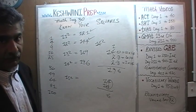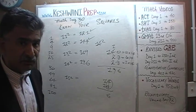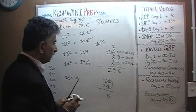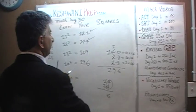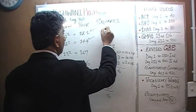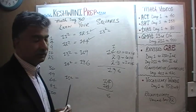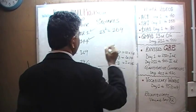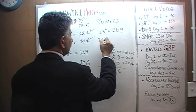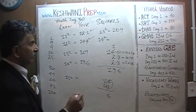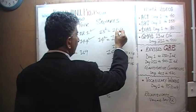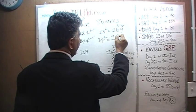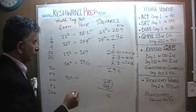For some strange and inexplicable reason, I don't have too much trouble remembering 13 squared — it's 169. So when I get to 14 squared, what I say to myself is: take 13 squared and just reverse the last two digits. Instead of 6, 9, it is 9, 6. It's 196.